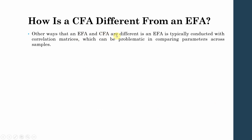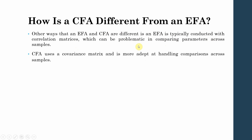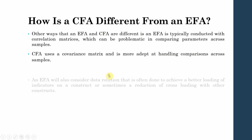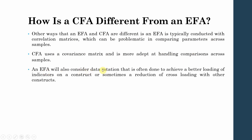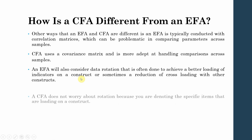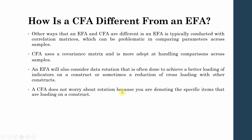Another difference is that EFA is typically concluded with correlation matrices, which can be problematic when comparing parameters across samples, whereas CFA uses covariance matrices and is more adept at handling cross-sample comparisons. EFA also uses data rotation — such as a rotated component matrix — to achieve better loading of indicators on a construct and reduce cross-loading. CFA does not use rotation because you are specifying the items to a particular construct from the outset.